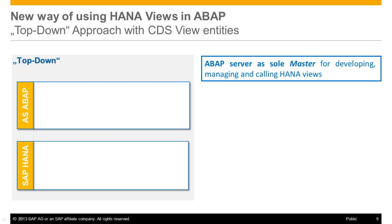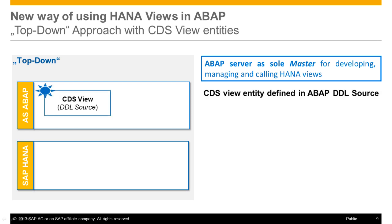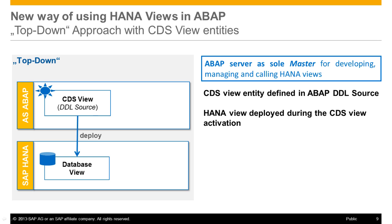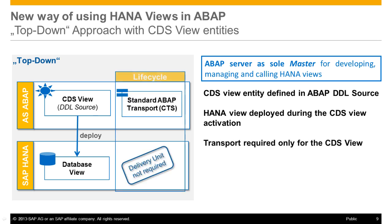Developers are now able to create and manage the whole life cycle of HANA views in an ABAP development environment. With this top-down approach, the CDS view is defined in an ABAP DDL source object, and the corresponding HANA view is then automatically created on the database during the CDS activation. The benefit of this approach is that only the CDS view has to be transported with the standard ABAP transport mechanism. No HANA delivery unit and no HANA transport container are involved in the process.